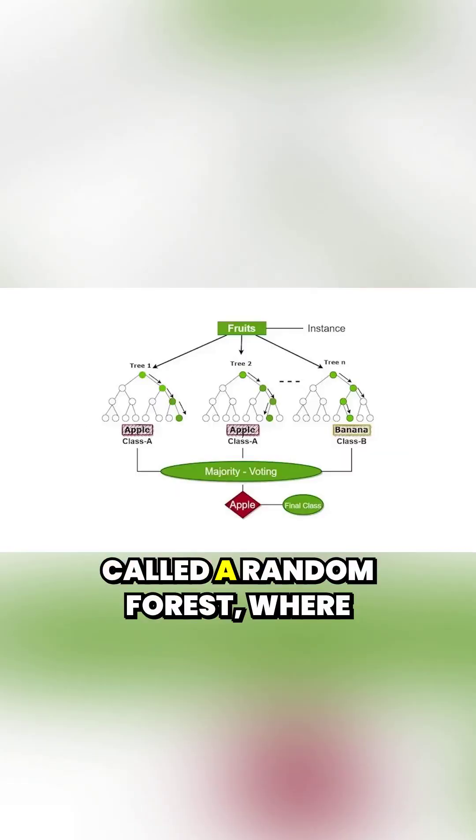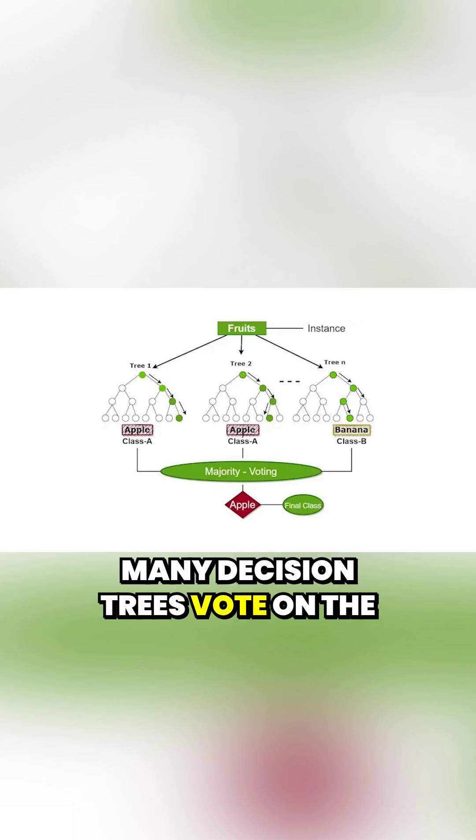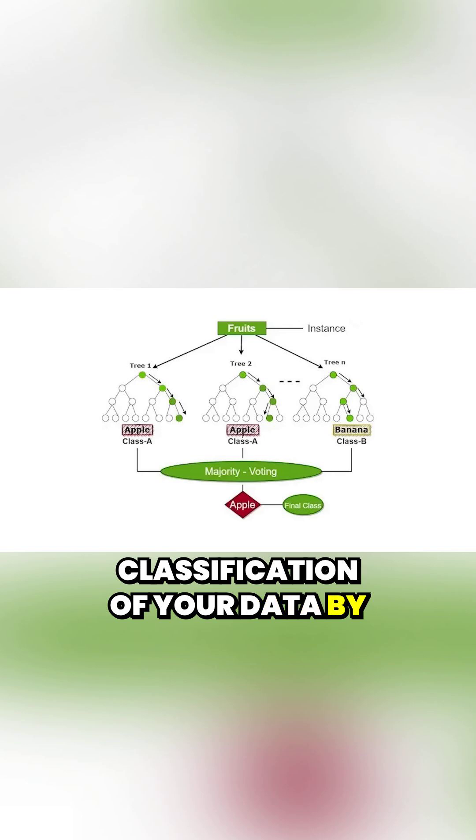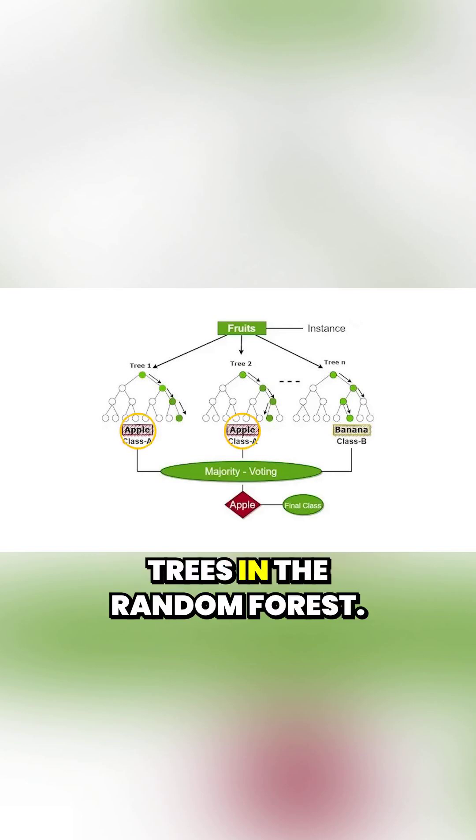A famous version of this idea is called a random forest, where many decision trees vote on the classification of your data by majority vote of the different trees in the random forest.